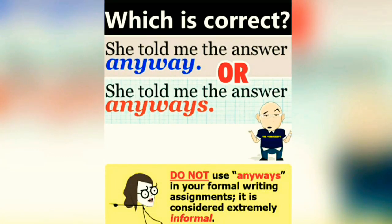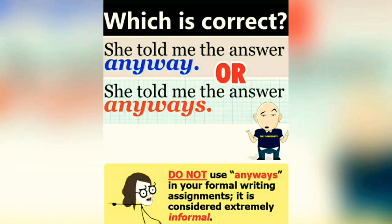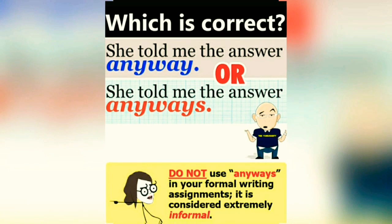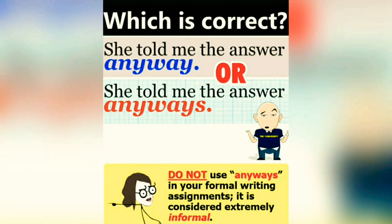Which is correct: anyways or anyway? The word 'anyways' is often used in spoken English, but it should be avoided in writing because it is considered to be extremely informal. The word 'anyway' without the S is considered acceptable in formal writing and should be used instead. Anyway is an adverb and means 'regardless' or 'in any event.' You shouldn't use 'anyways' in your formal writing — delete it from your brain and convince yourself that it doesn't exist.